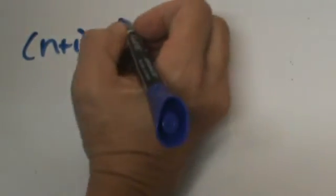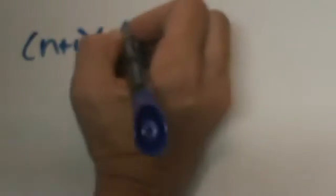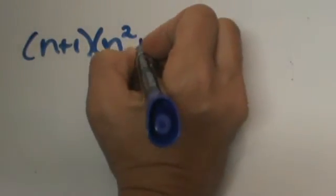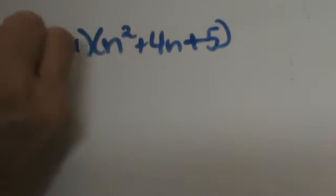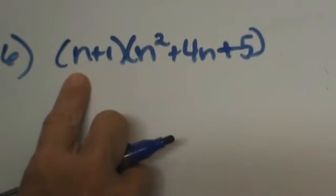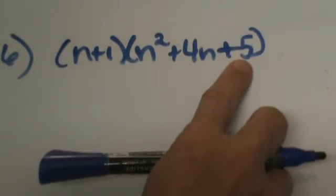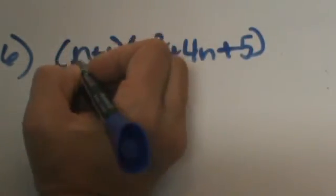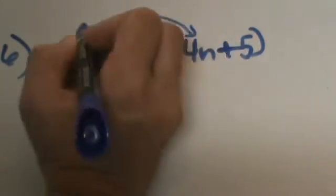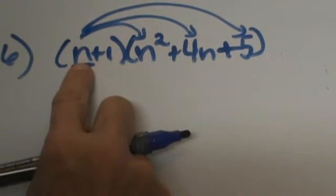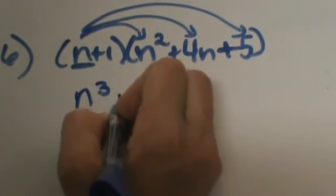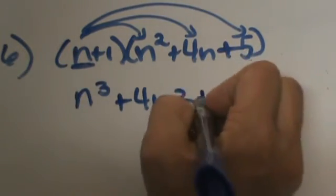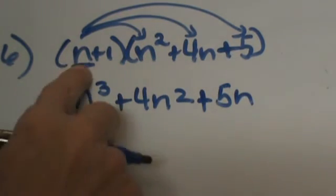Now let's look at a binomial times a trinomial. 'Bi' means two terms, so n plus 1 is our binomial, and n squared plus 4n plus 5 is the trinomial. This is similar to FOIL but with an extra term, so it is easier to think about distributing. I'll take the first term n and distribute it to each term in the trinomial: n times n squared gives n cubed, n times 4n gives positive 4n squared, and n times 5 gives positive 5n.